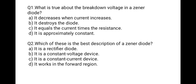The first question: what is true about the breakdown voltage in a Zener diode? Option A: it decreases when current increases. Option B: it destroys the diode. Option C: it equals the current times the resistance. Option D: it is approximately constant. The correct option is D — it is approximately constant. When a Zener diode breaks down, the voltage remains constant across the diode.